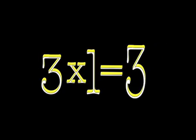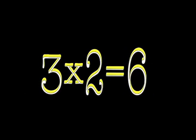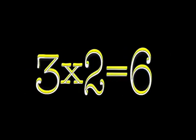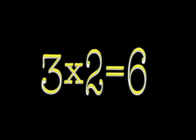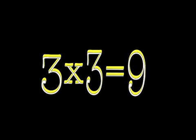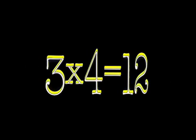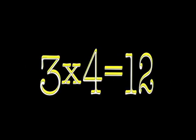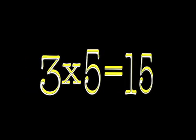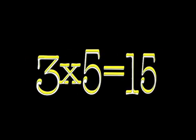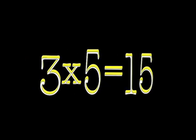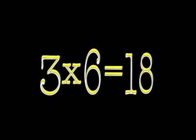3 × 1 is 3. 3 × 2 is 6. 3 × 3 is 9. 3 × 4 is 12. 3 × 5 is 15. Three times six is eighteen.